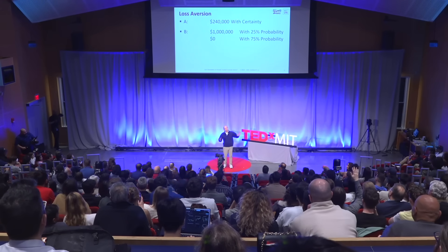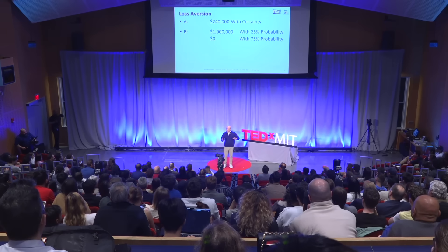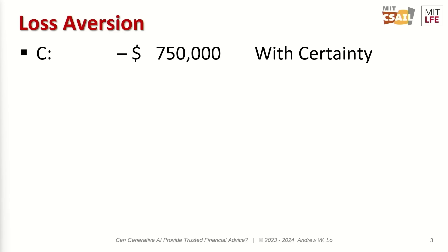Let the record show that most of you wanted A, the sure thing, and a few hands picked the risky option B. Now let me ask you to make another investment decision between two other choices. Investment C is a sure loss of $750,000.